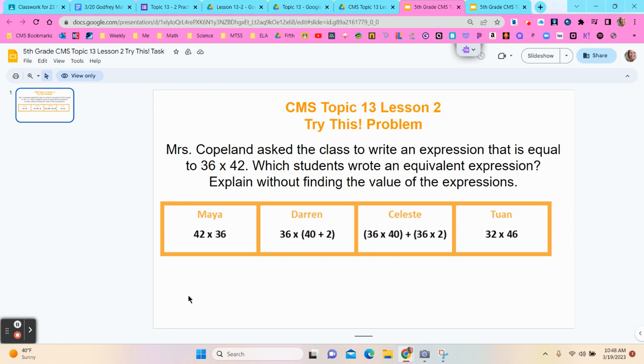Now Derek says 36 times 40 plus 2. I know that the parentheses in Darren's right here tell me that I should do 40 plus 2 first. So that will give me 42, which then gives me 36 times 42. So Darren did it right. He did the exact same thing that Mrs. Copeland asked him to do.